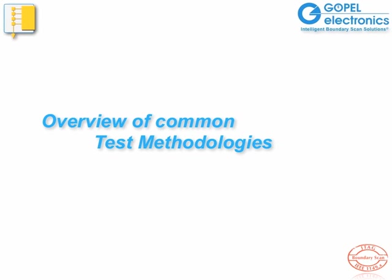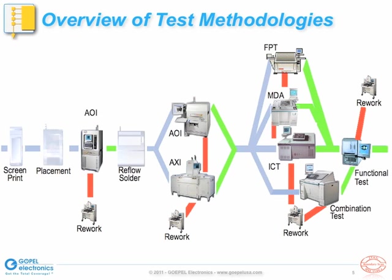Let's look at test methodologies commonly used in today's electronics industry. This diagram shows a typical electronics manufacturing flow, where on the left side we start with a screen printing process for the carrier, typically a printed circuit board. On the right side, we finish the manufacturing process with tests of the final assembly before shipping the end product. In between, we typically have test steps at various stages of the manufacturing process.